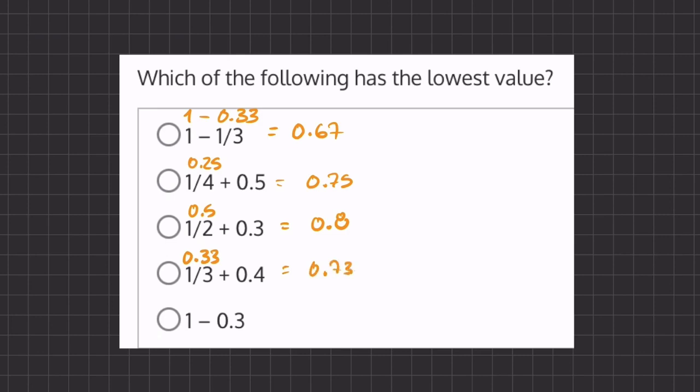And our last one, 1 minus 0.3, is going to give us 0.7. Now if we compare all of our answers, we can tell that our first one is going to be our lowest value.